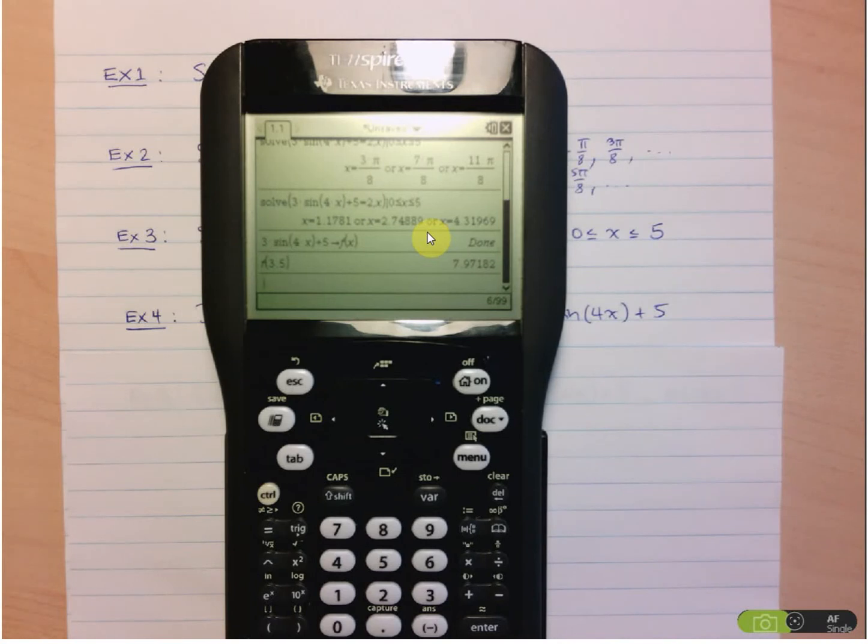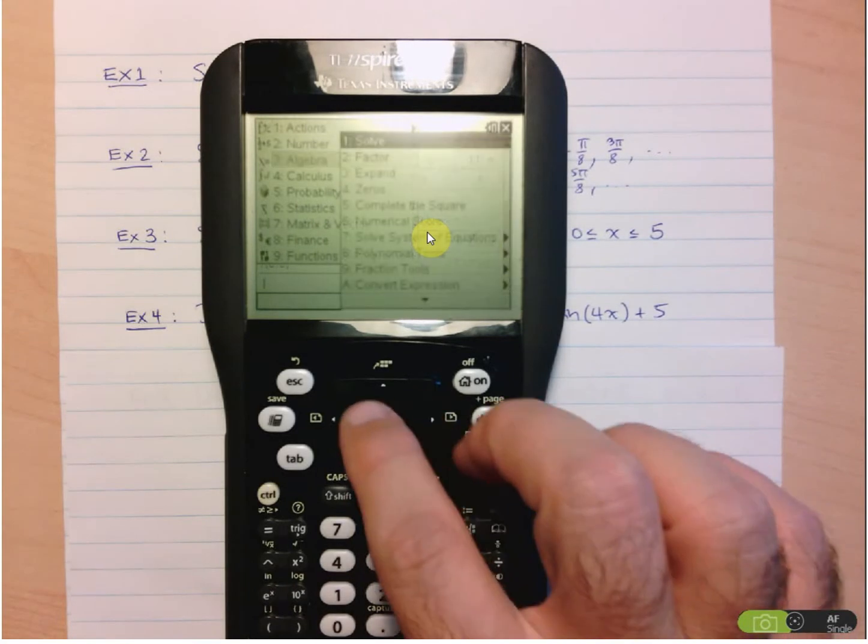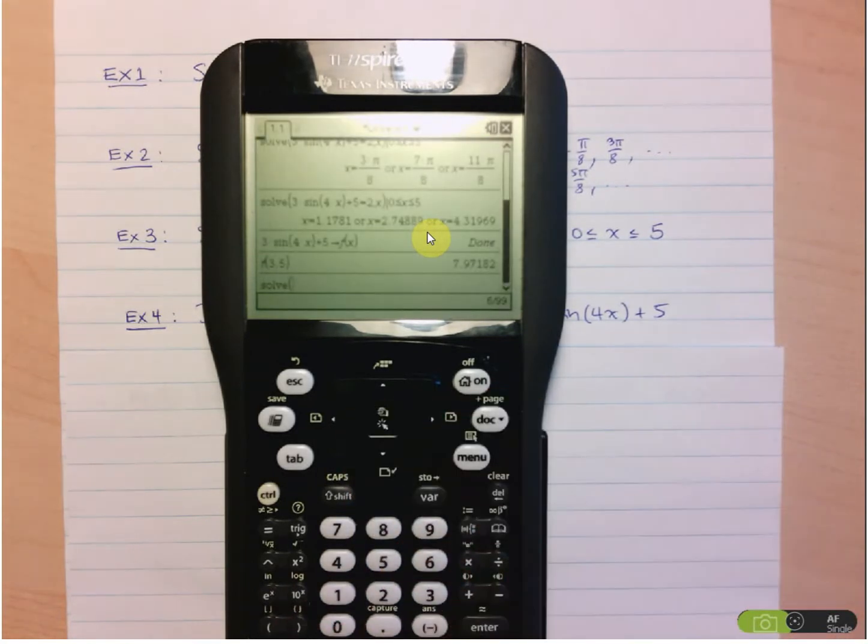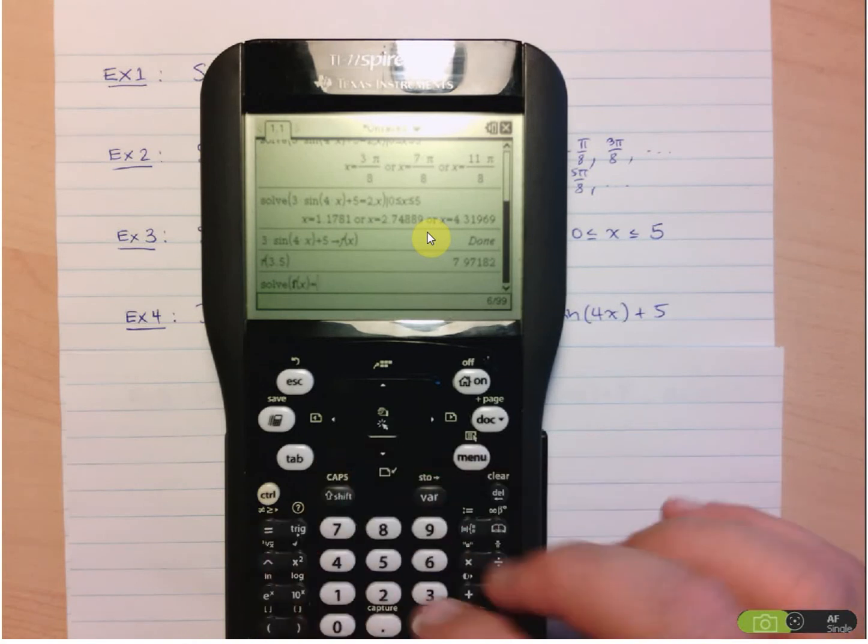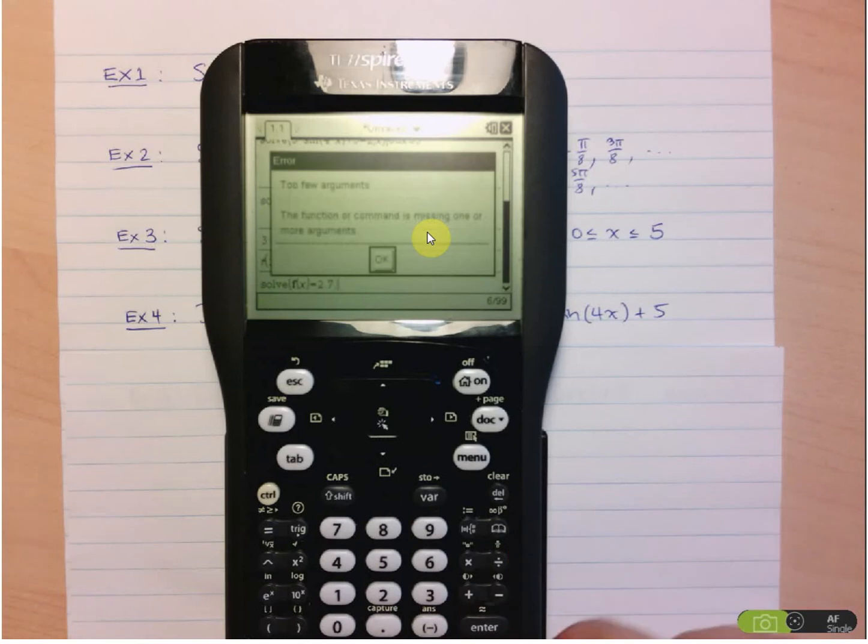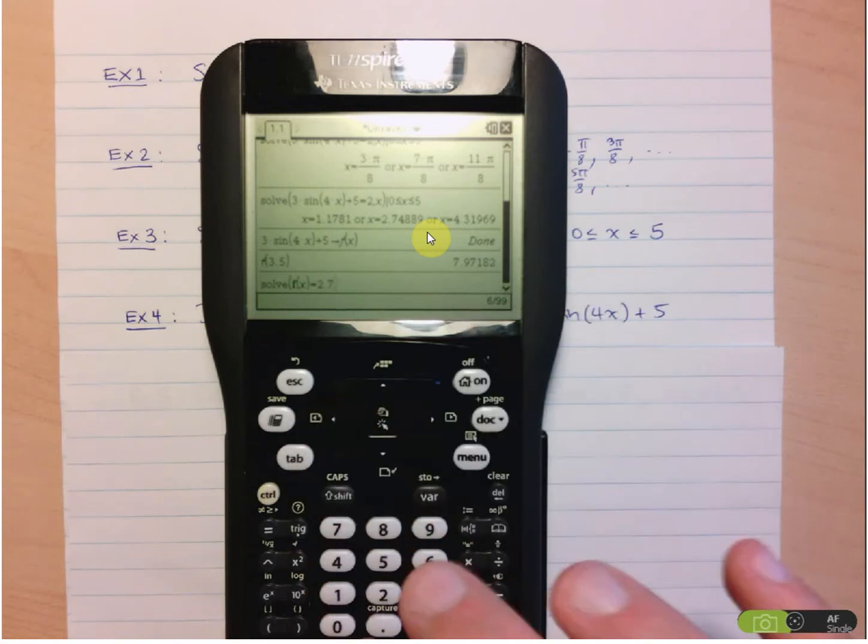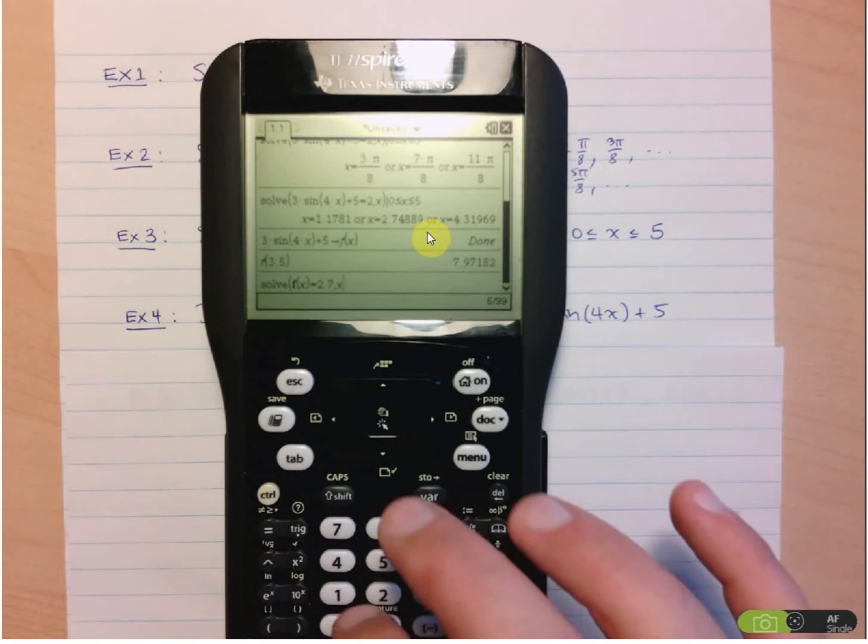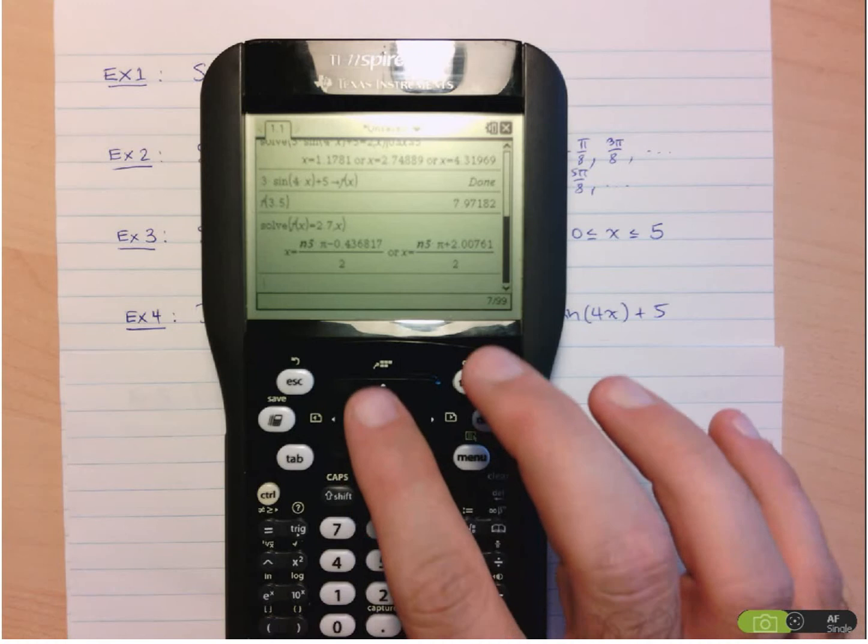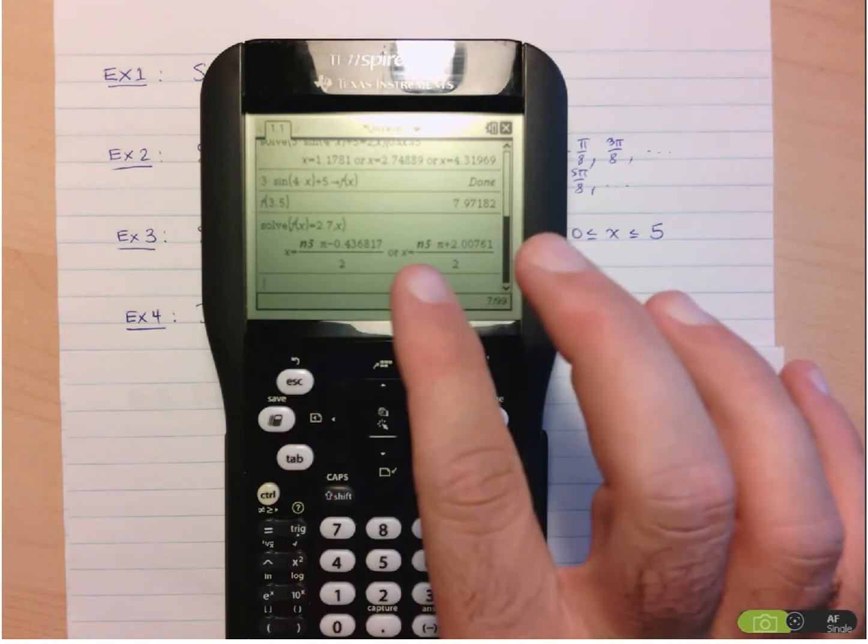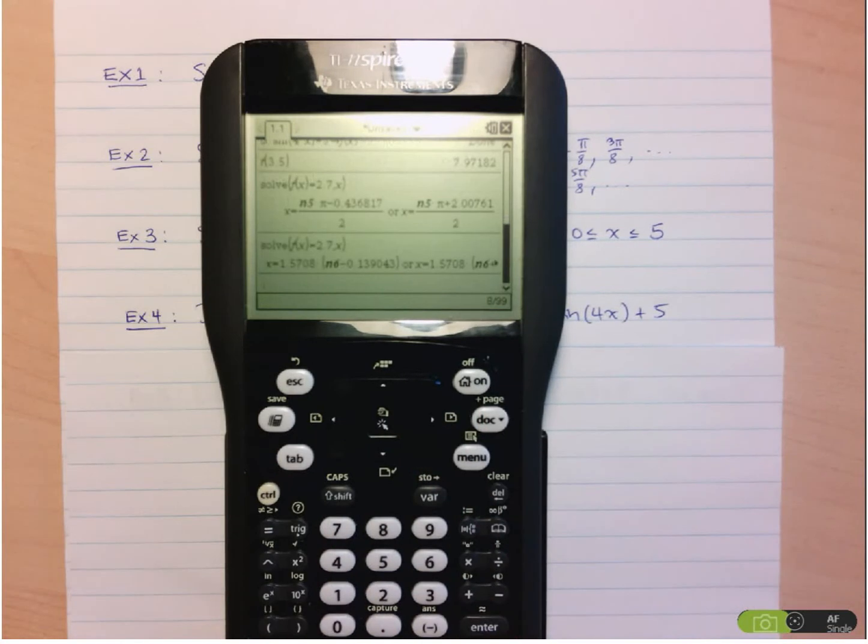Now, we can also use the solve button. So we can go back and go to menu, solve, and instead of having to retype the whole equation or copy and paste it, we can just say, we want to know when F at X is equal to, say, 2.7. Oh, and of course, good idea to make a mistake once in a while because I realized I forgot to indicate that the variable I'm solving for is X. So let's just go put that in, and now we get that, and again, we've got multiple answers. So you see again here, now we're using N5.